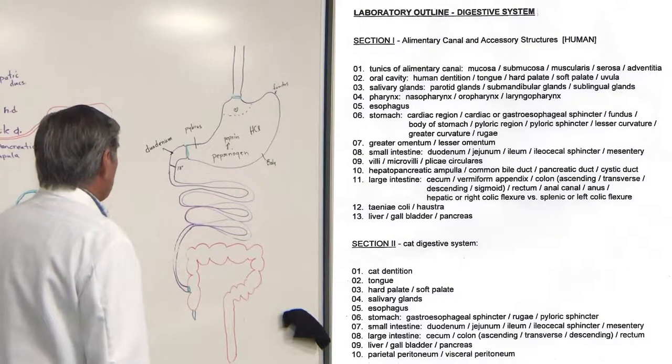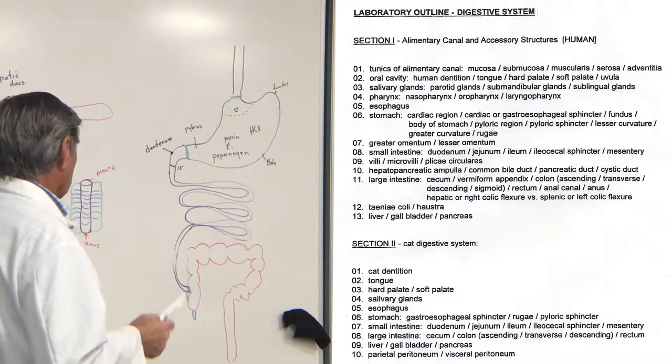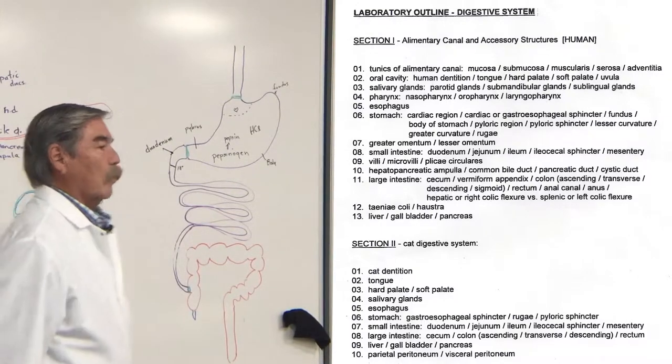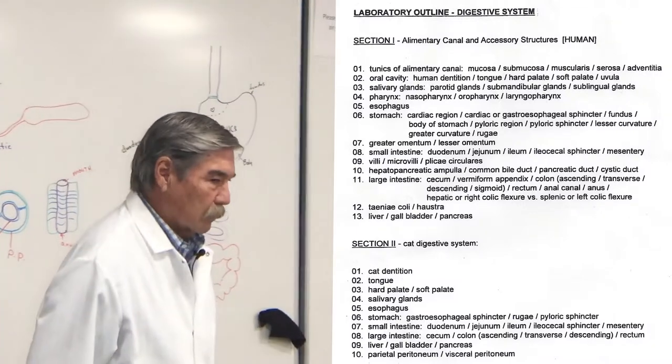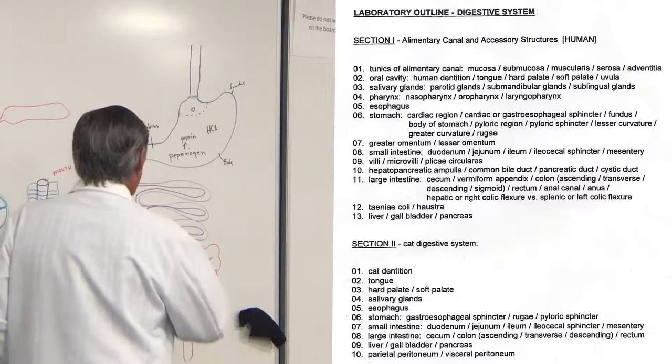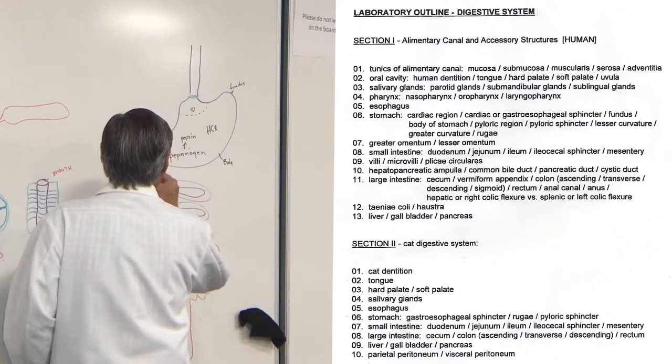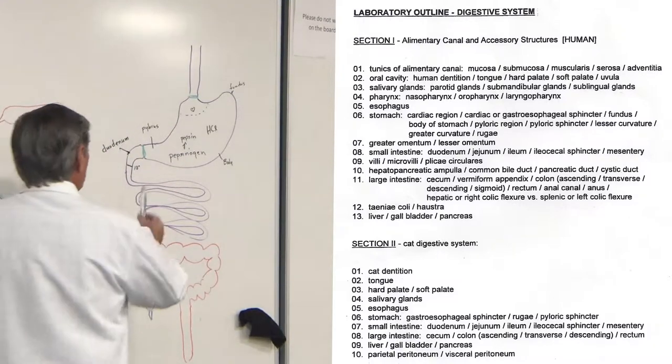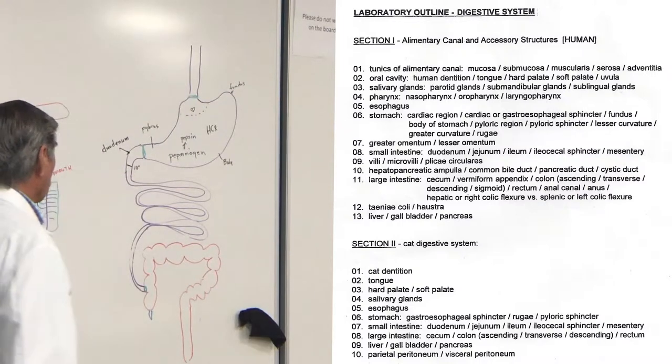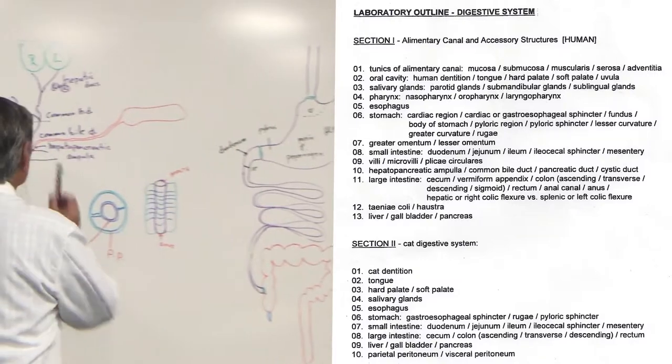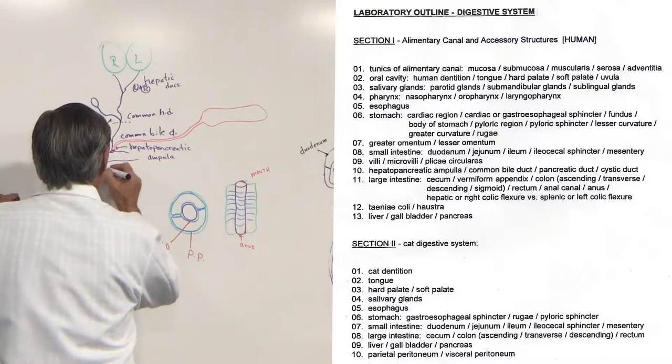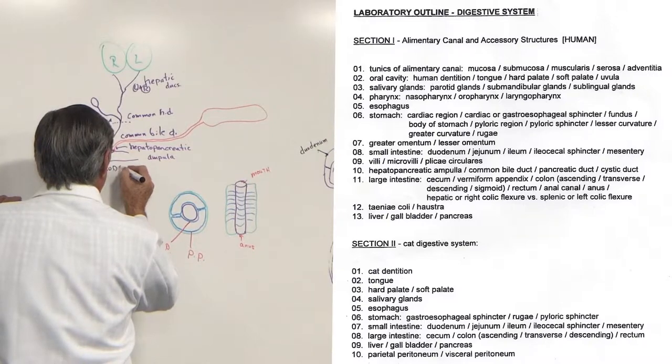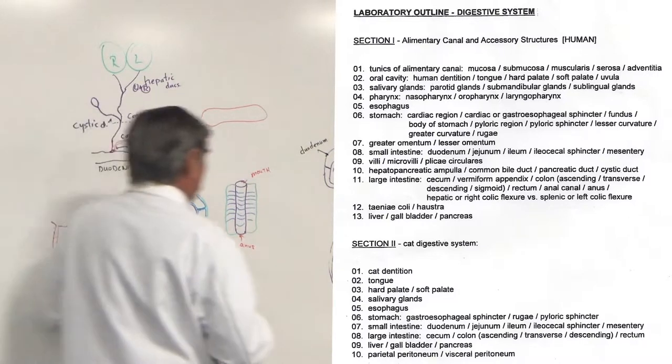I would say that the key function, the responsibility of the duodenum is to neutralize the acid coming in. If this pump is going to start squirting contents into the next region, the duodenum, the first order of business, since there's no protection on the walls of the duodenum and the rest of the intestine, is to neutralize it.